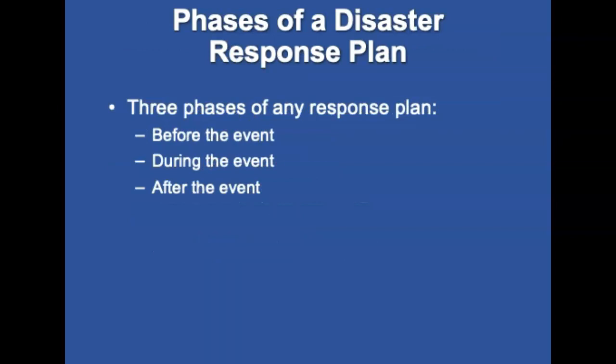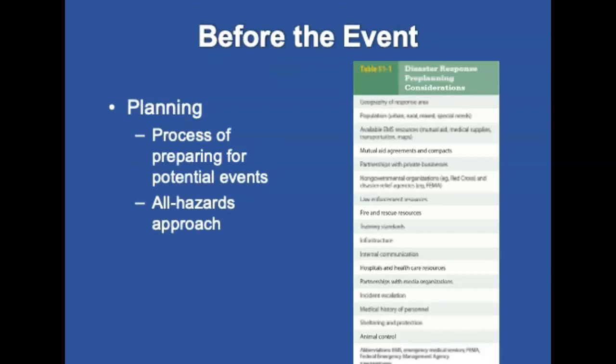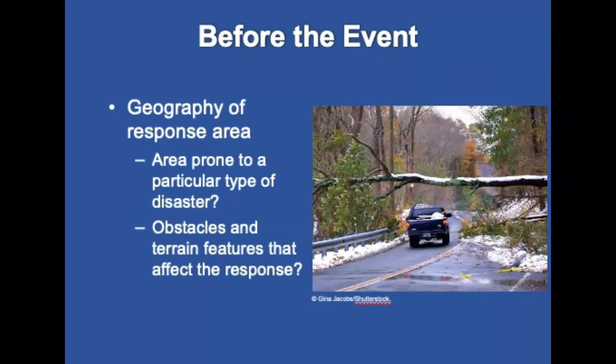The keys to planning a disaster include thinking, meeting, and brainstorming. There are three phases of any response plan: before the event (the planning phase), during the event, and after the event. Before the event, planning is the process for preparing for potential events. No disaster is predictable, but some events are more likely in certain areas, such as a snowstorm in the Northwest or a tornado in the Midwest. An all hazards approach will put your agency in the best position to handle any disaster. Main items to consider include the geography of the response area, whether it is prone to a particular disaster, and whether there are obstacles or terrain features that affect response or hinder access to equipment or a facility.